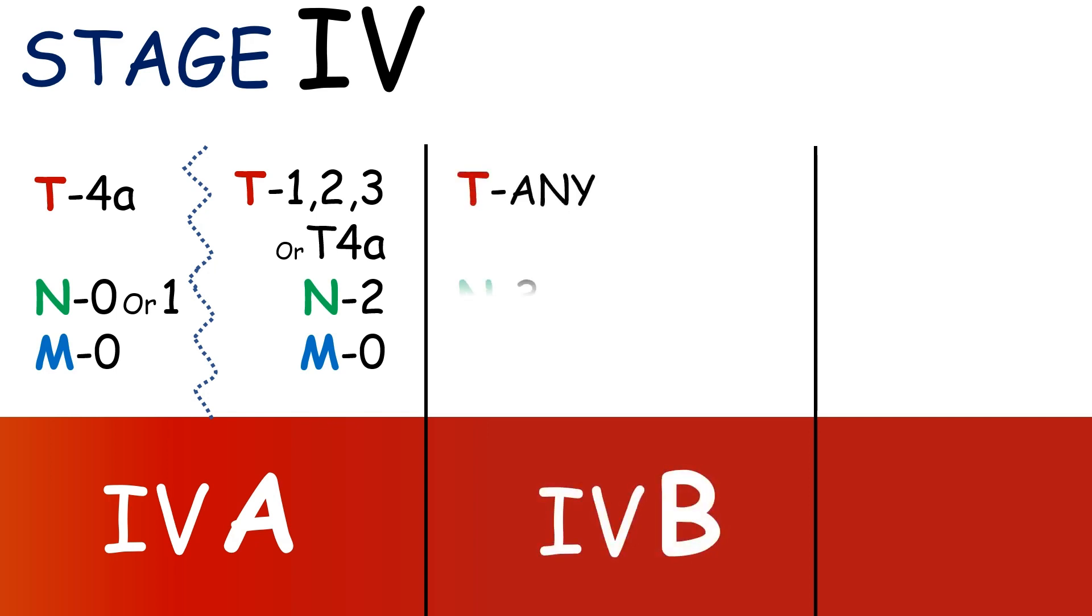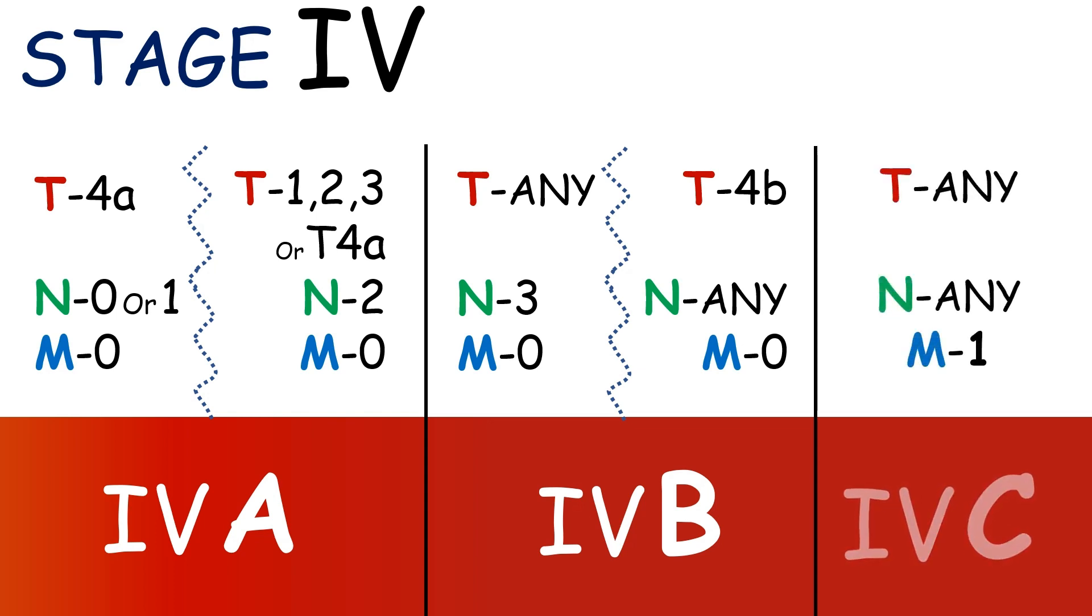Stage 4b is reached if T is in any state with N3 and M0, or T in 4b state with N in any form and M0. Stage 4c requires M1, and this is the only stage of cancer with distant metastasis.